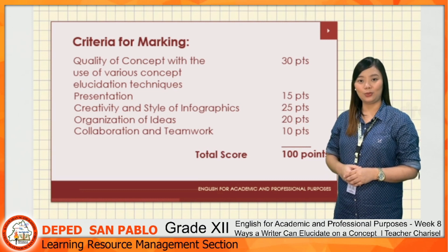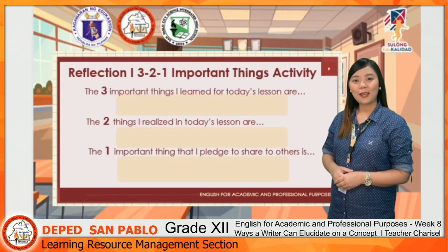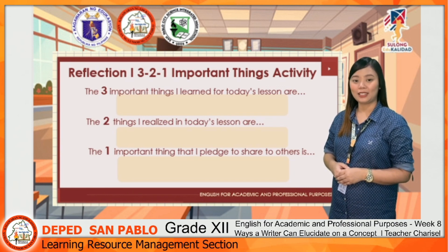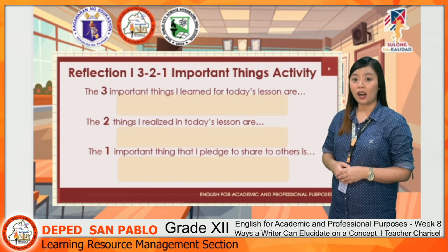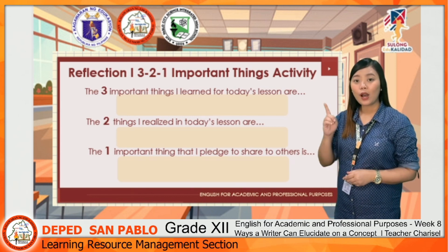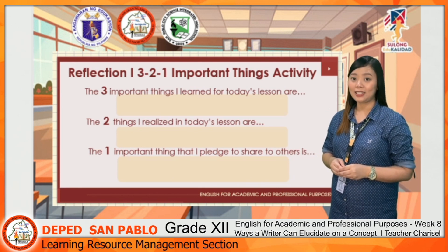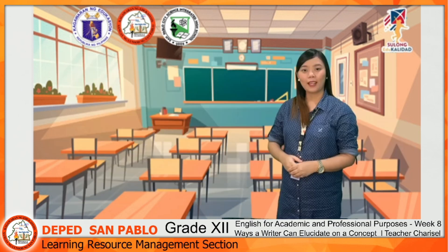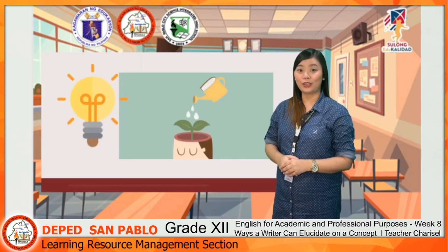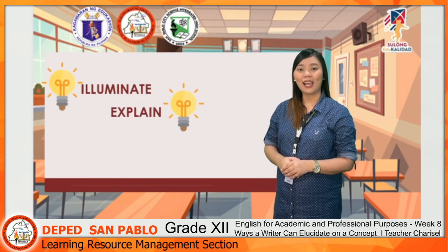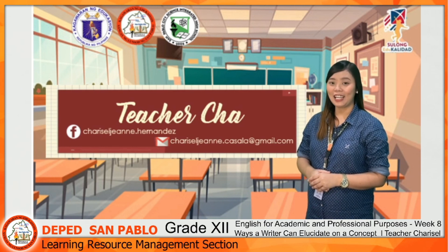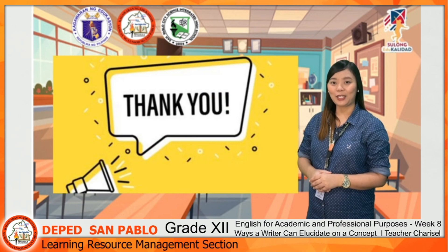I hope that you will be able to finish this activity. It's time for reflection. Let's accomplish the 3-2-1 activity: complete the statements — the three important things I learned, the two things I realized, and the one important thing I pledge to share with others. Write your reflections in your activity sheets. That ends our lesson for today. I'm sure you have learned new things on how to illuminate, explain, and clarify concepts. Once again, I'm Teacher Chalk, and see you tomorrow for another interesting lesson in English for Academic and Professional Purposes. Thank you for listening!